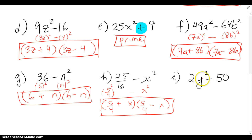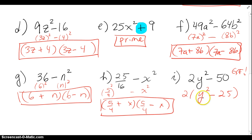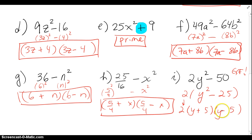For 50y squared minus 2, these don't look like perfect squares — 50 is not a perfect square, neither is 2. However, remember that the first check is always GCF in any factoring problem. The greatest common factor here is 2, which leaves y squared minus 25. And now this is further factorable. So 2 comes out front, and then y squared minus 25 factors into y plus 5 times y minus 5.